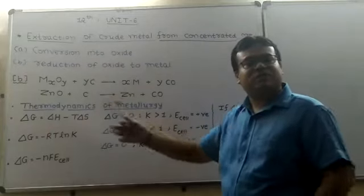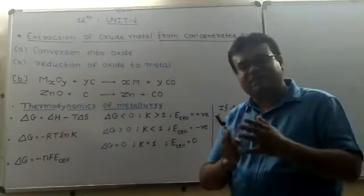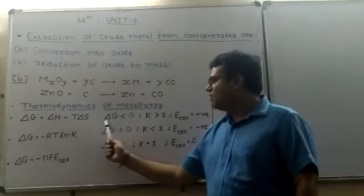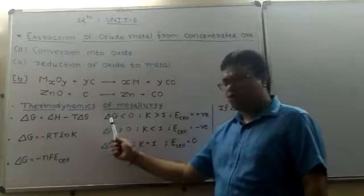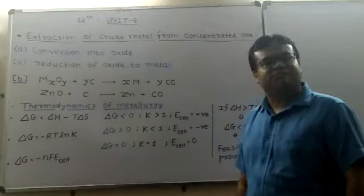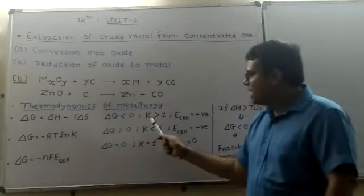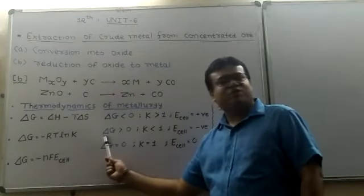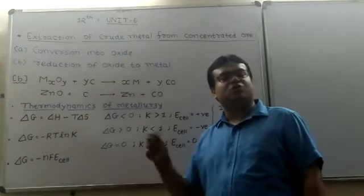How can we consider whether a given reaction is feasible or will occur on its own? We know that if ΔG value is less than 0, the reaction is feasible. We can compare K value greater than 1 and E_cell value positive. If ΔG is positive, the reaction is not possible or not spontaneous.